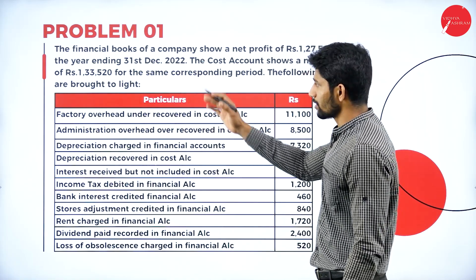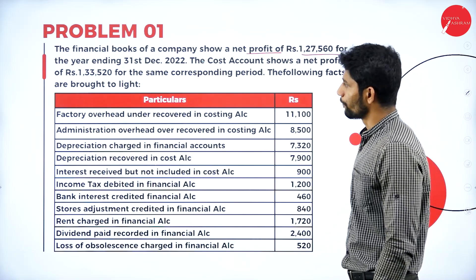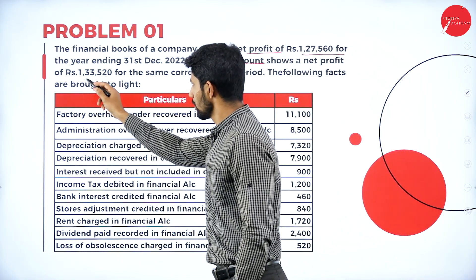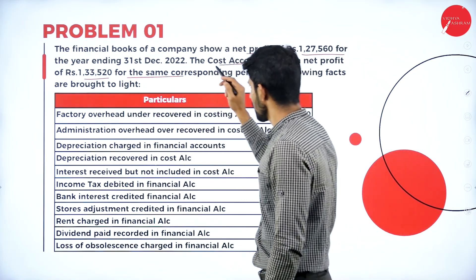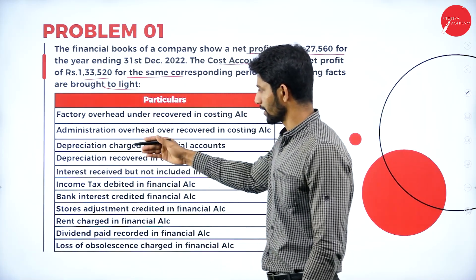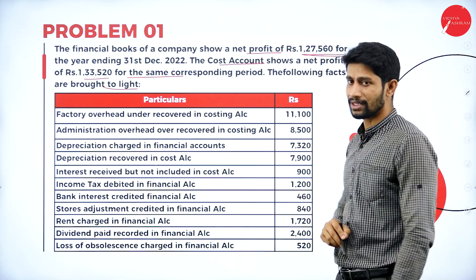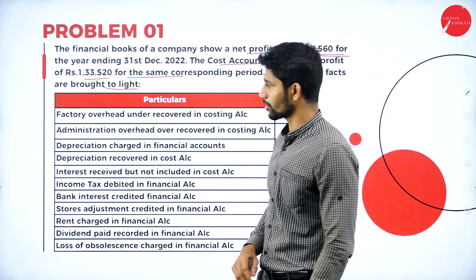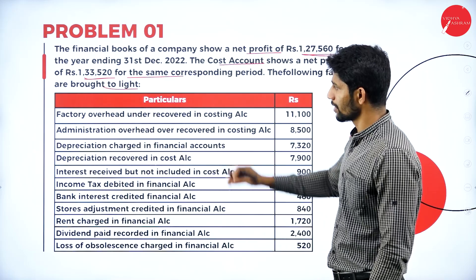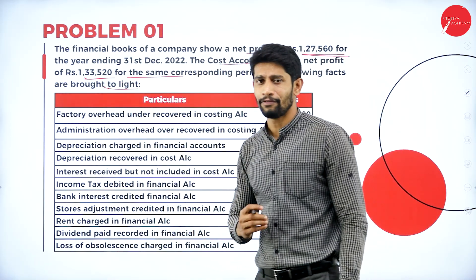The financial books of a company show a net profit of Rs. 1,27,560 for the year ending 31st December 2022. The cost accounts show a net profit of Rs. 1,33,520 for the same corresponding period. Before getting to the other factors, first look into the profit. Net profit as per financial books is Rs. 1,27,560 and net profit as per costing books is Rs. 1,33,520. There is a clear difference between the financial books and the costing books.